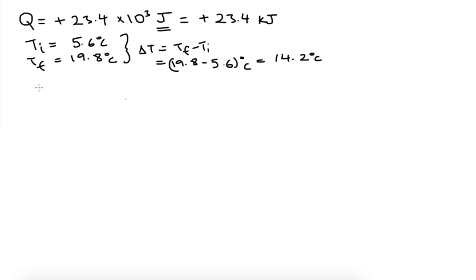And we have been given the specific heat, which is 2.46 joules per gram degrees Celsius. So now we have the equation q equals mc delta T. We've been asked to find the mass.